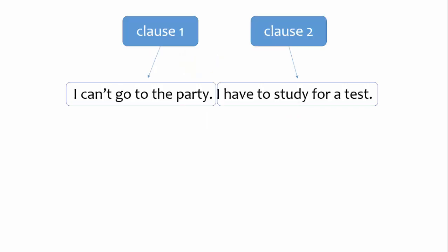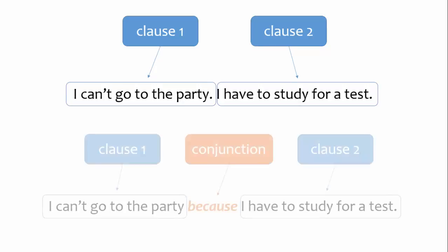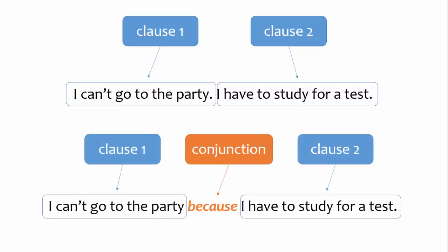In English as in German, you can connect two clauses using a conjunction. The conjunction shows the relationship between the two clauses.